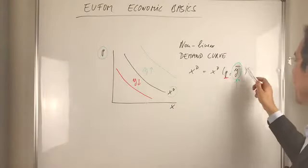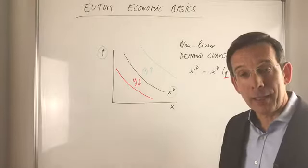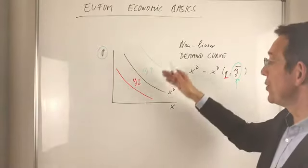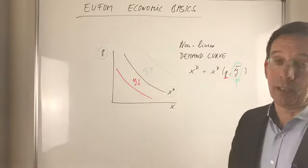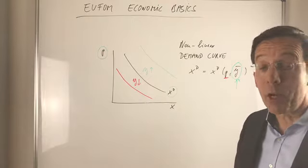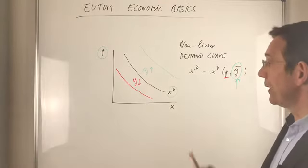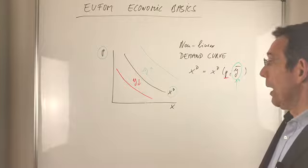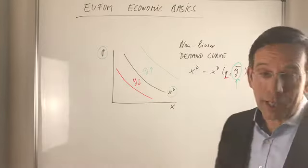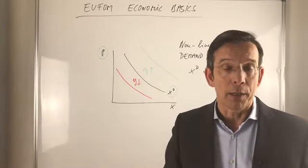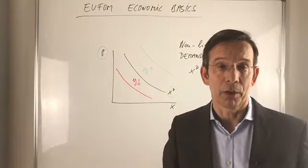So changes in the income parameter changes the demand curve by shifting it. However, what happens if we rotate a given demand curve?